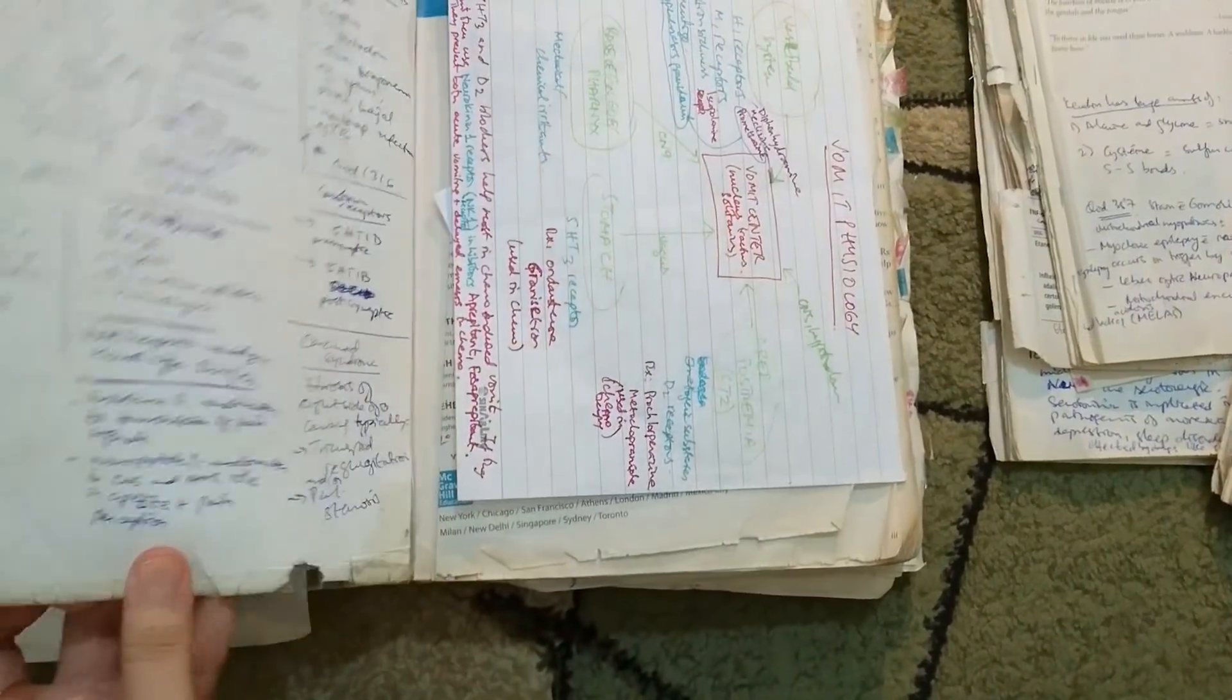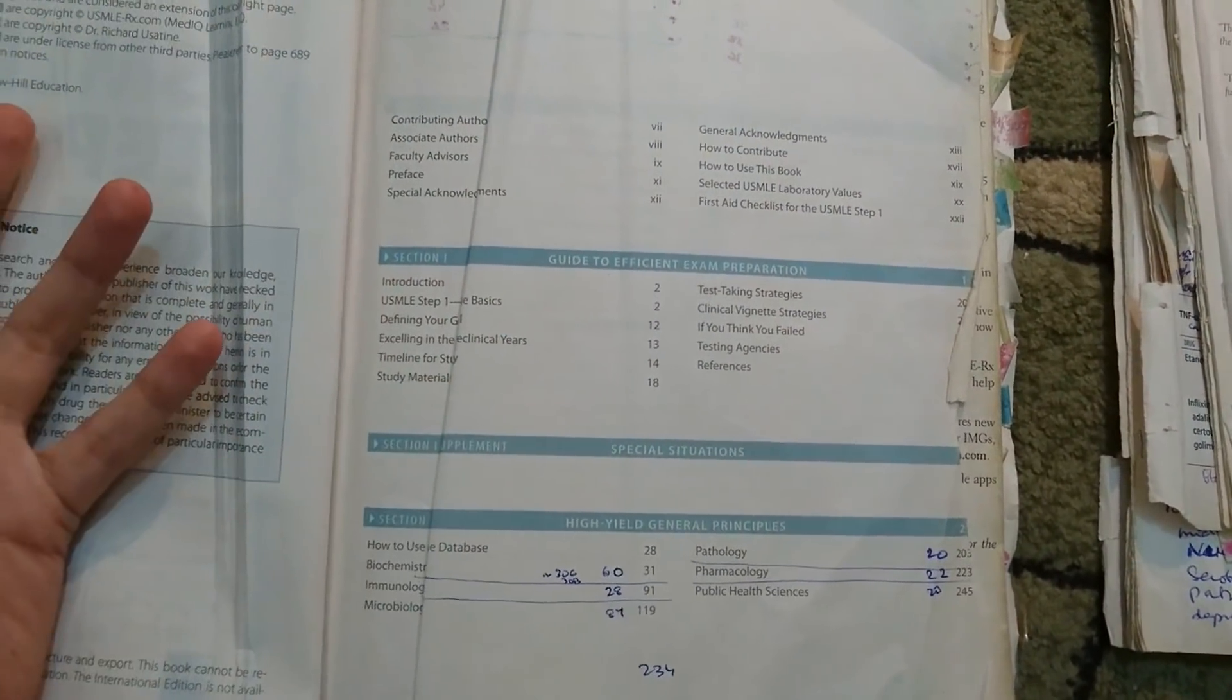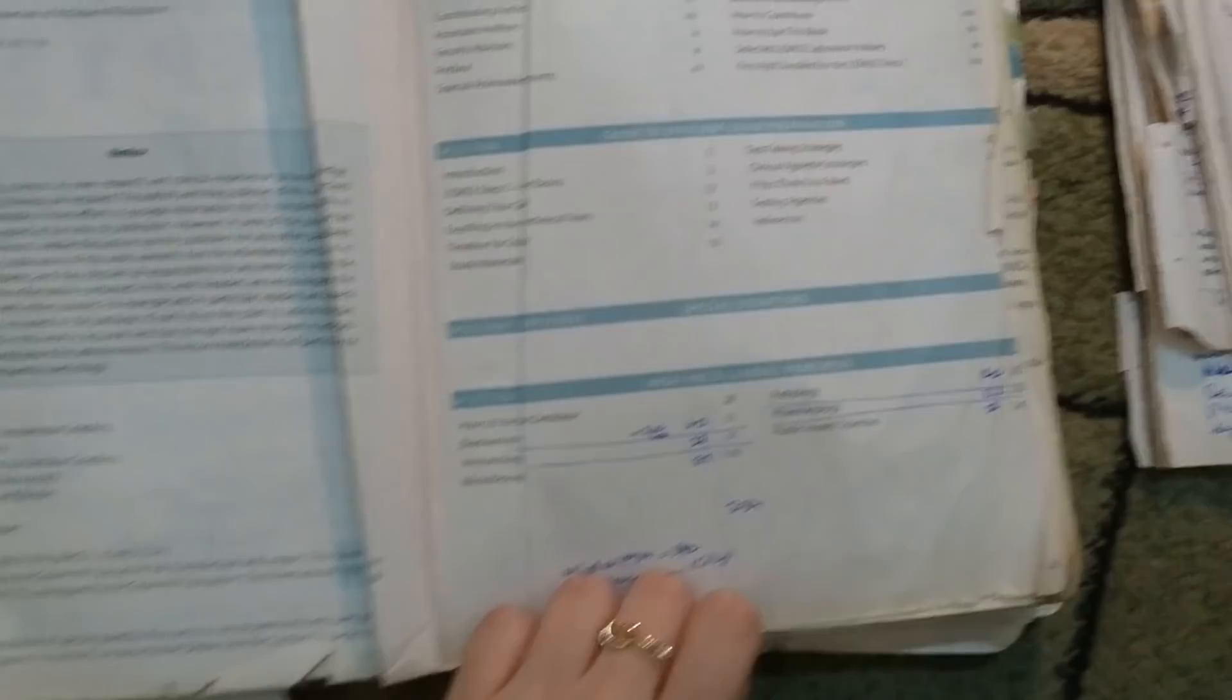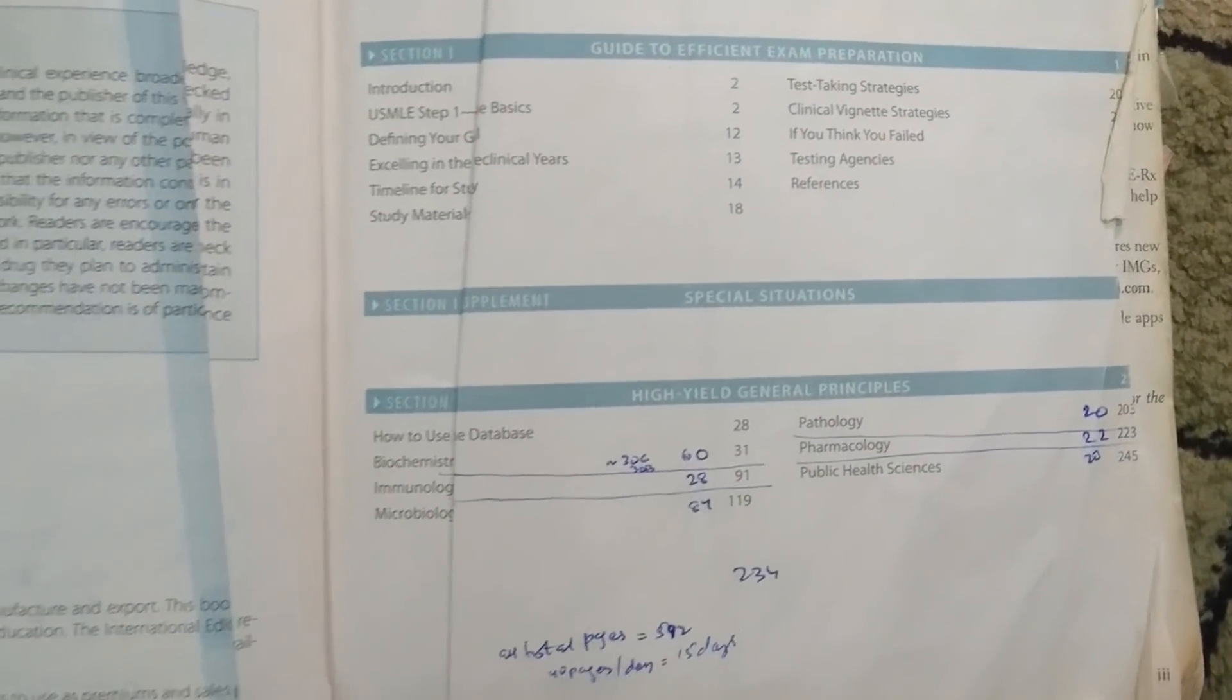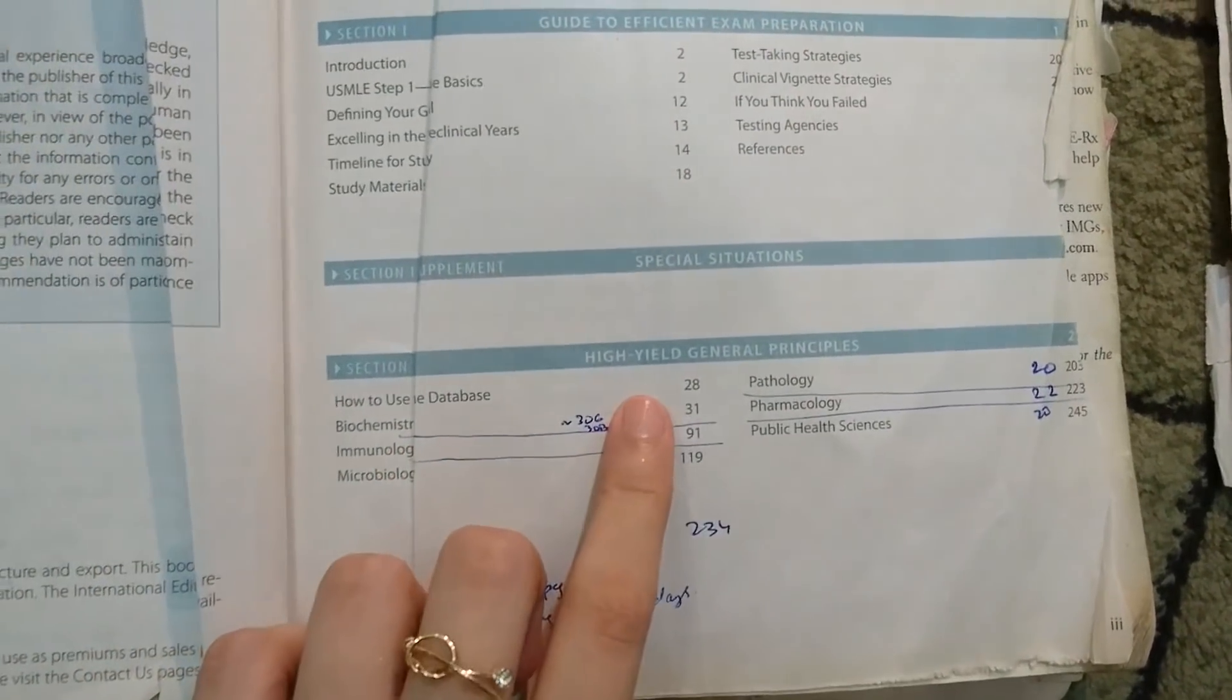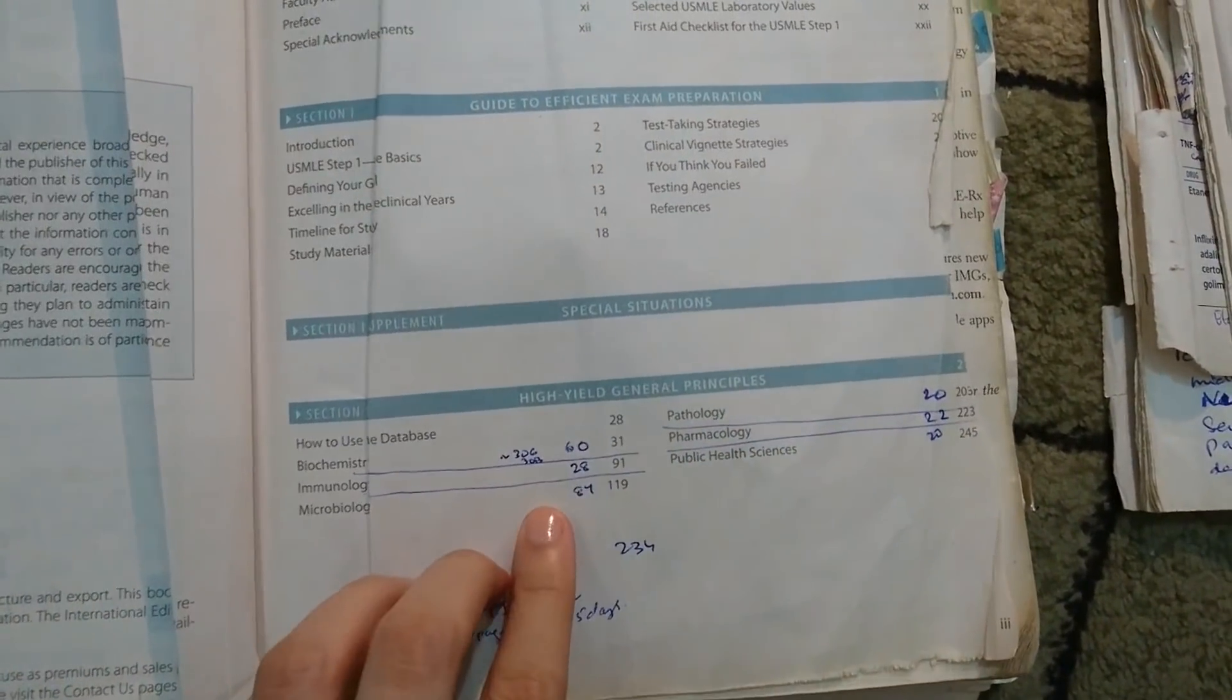So coming back to the First Aid, the first thing that you do when you start with the book itself is you go on to the index. You're gonna see all this stuff first which you don't really have to read unless you want to. This is where the real good stuff starts which is your high yield general principles. It contains six of the general principle topics. So what you do is that coming here you write down the total number of pages contained inside each of these chapters like so.